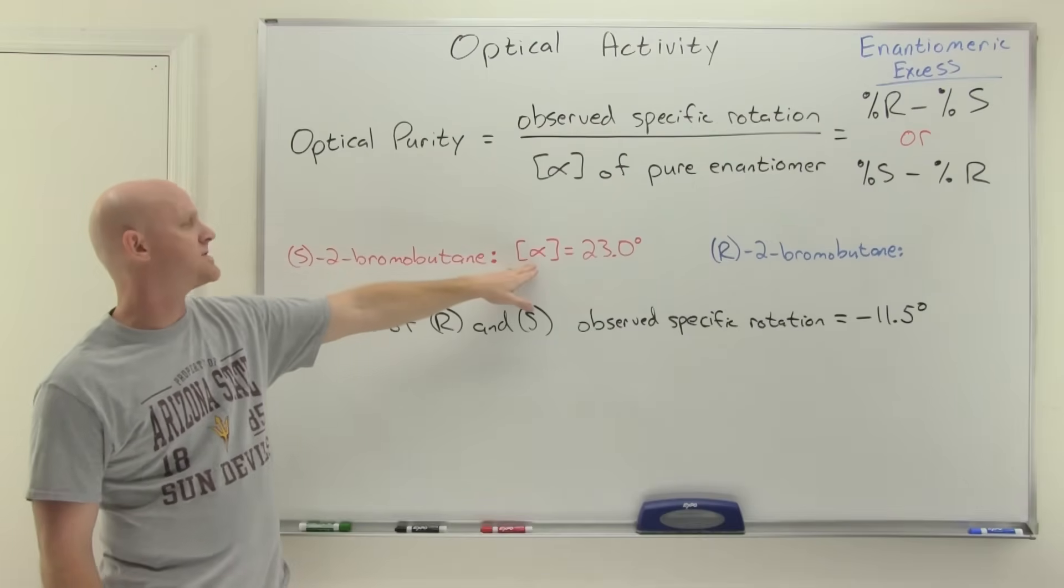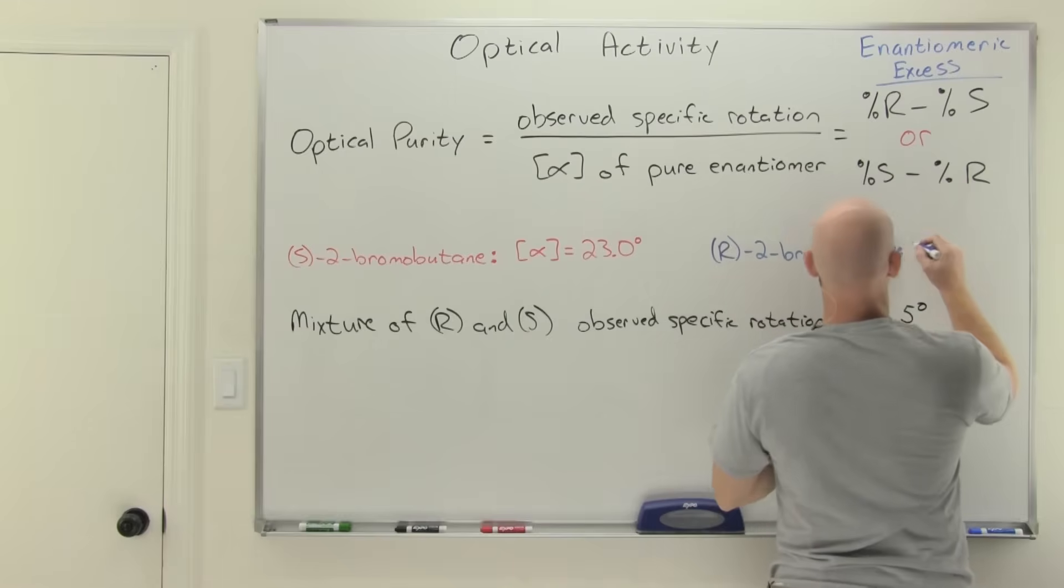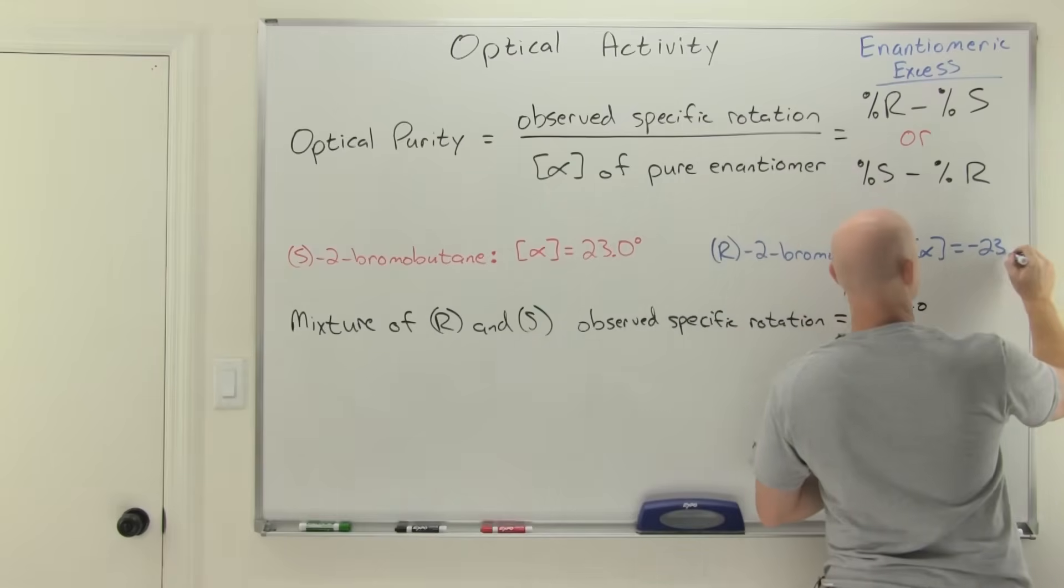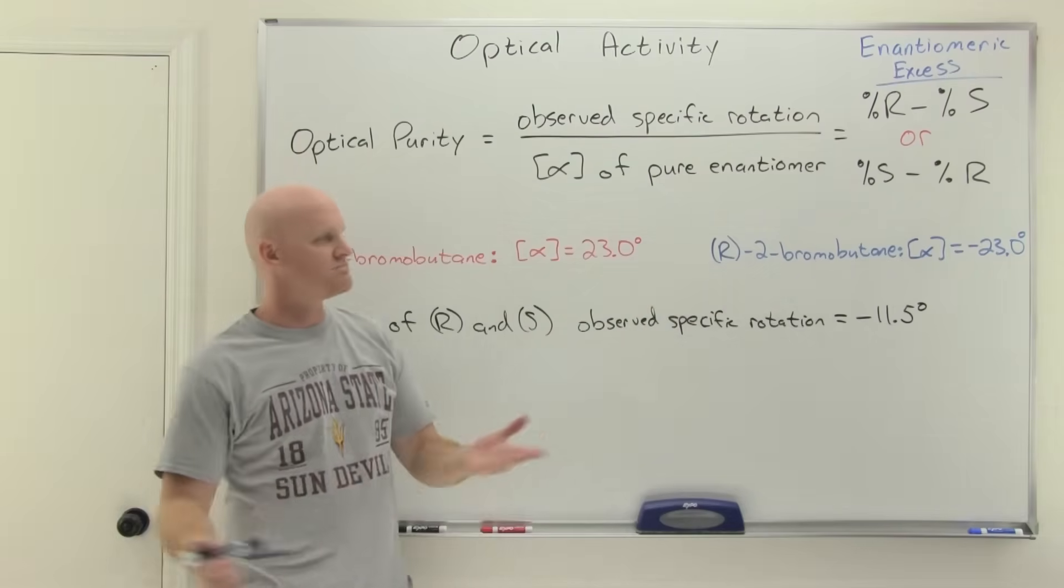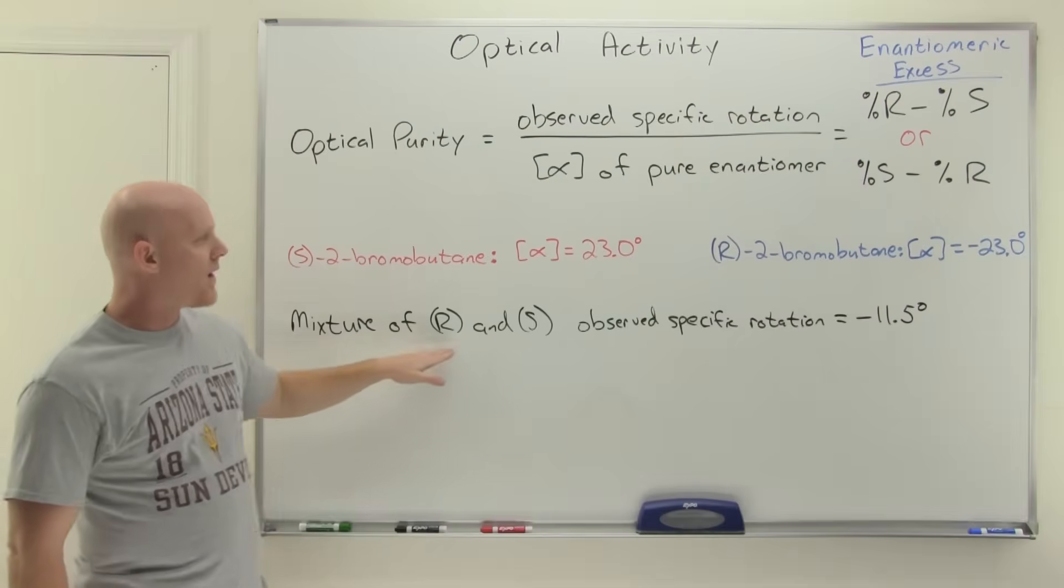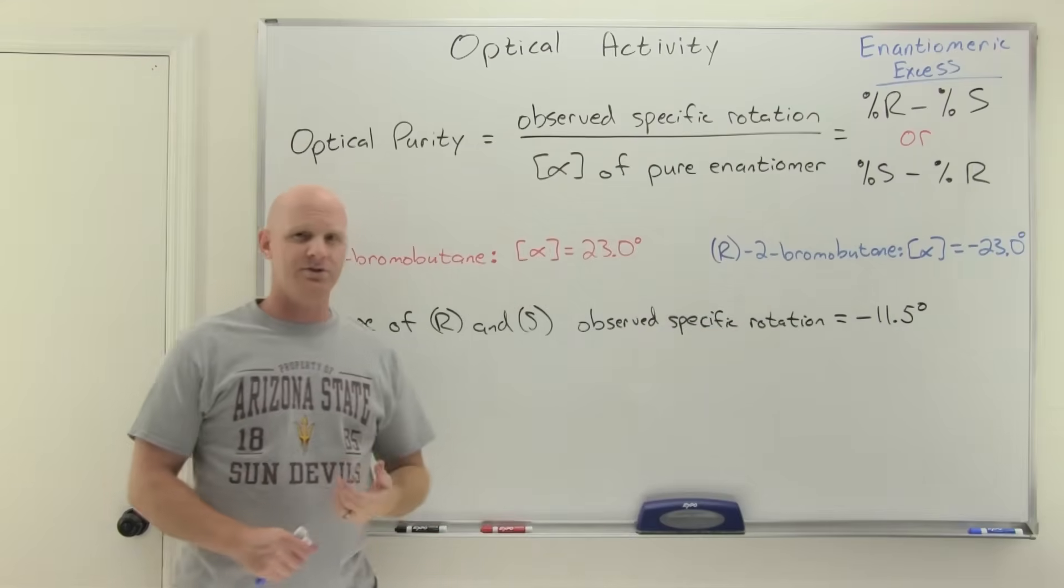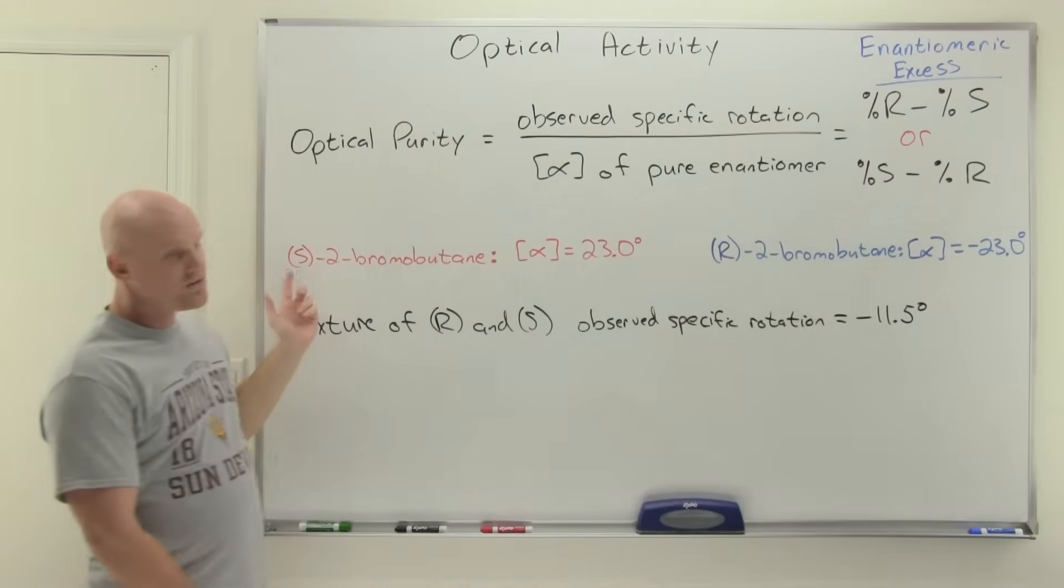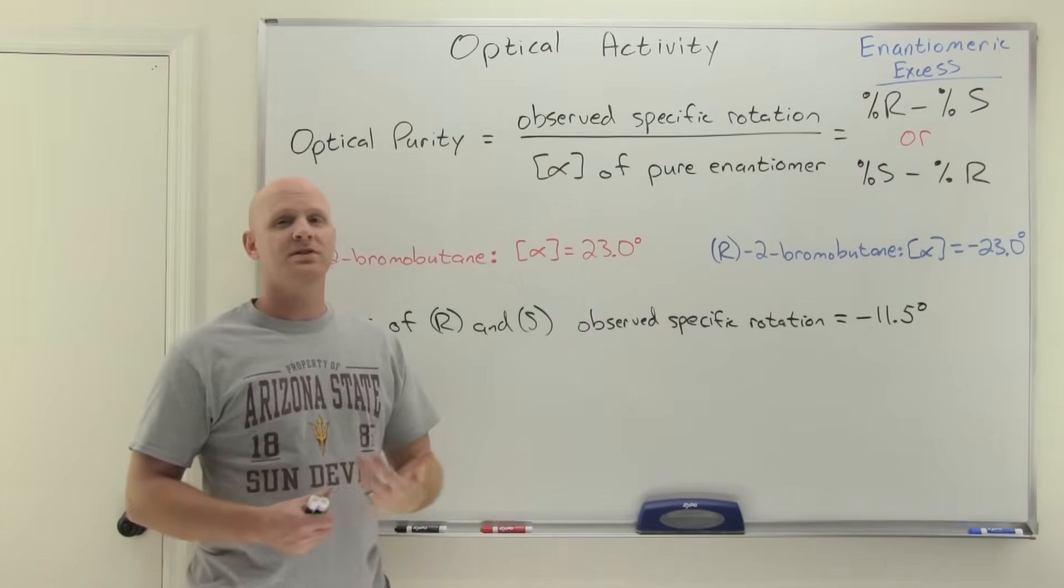So we're going to take a look specifically at an example of S-2-bromobutane. And for pure S-2-bromobutane, its specific rotation is 23.0 degrees. What you should know then is that if I've got R-2-bromobutane, its specific rotation would be negative 23.0 degrees. So this one's given, this one's just inferred. It's the exact opposite direction for the enantiomer. Well, we're going to have a mixture of both R and S-2-bromobutane mixed together. So in that mixture, we get an observed specific rotation of negative 11.5 degrees. Now, because it's negative, we can infer that in this example, there's more R-2-bromobutane than there is S-2-bromobutane. The question though is what is the composition of that mixture?